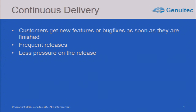As probably everyone knows, continuous delivery is a really cool thing. You can deliver to your customers as soon as your features are ready and tested. It also makes it easier for your team because you don't have so much pressure. If a fix or feature doesn't make a particular release, you'll release it in one week — the next day or two days. So there is less pressure on the team and it's also working in favor of quality.